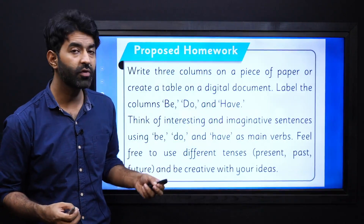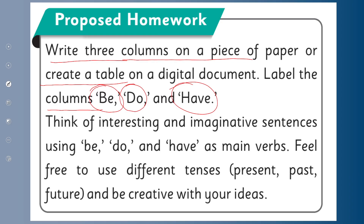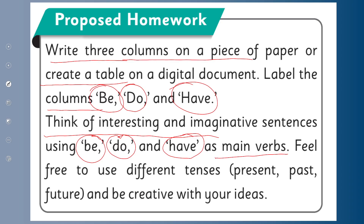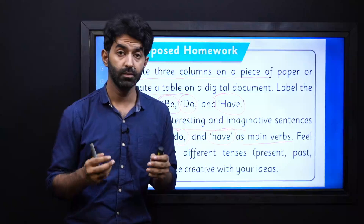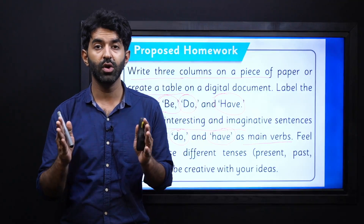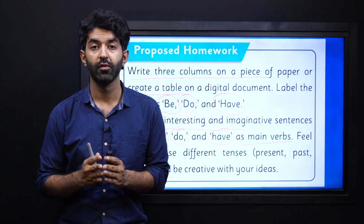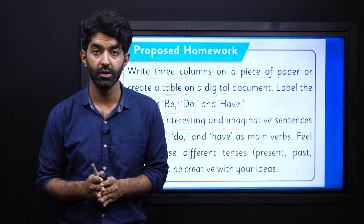We have a homework for you: make and write three columns on a piece of paper or create a table in a digital document. Label the columns 'be', 'do', and 'have' — these are our primary auxiliaries. Think of interesting and imaginative sentences using be, do, and have as main verbs. Feel free to use different tenses like present, past, and future, and be creative with your ideas. Now that you have understood how the main verbs and the helping verbs work, you can create a very good table showing how each verb works. This is very important homework — do it on time and submit it to your teacher.